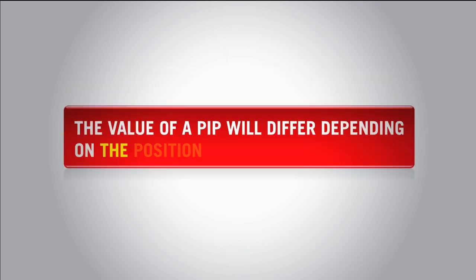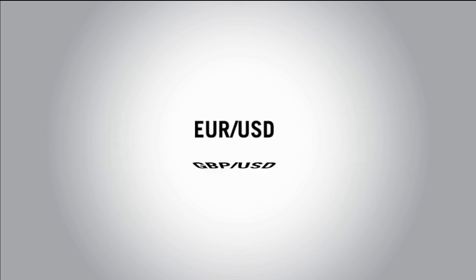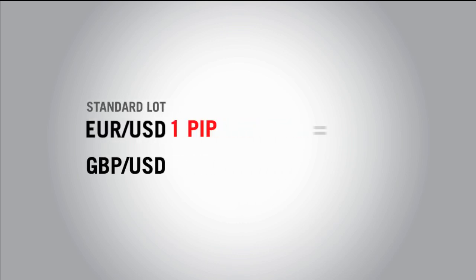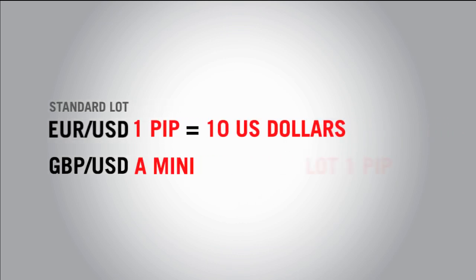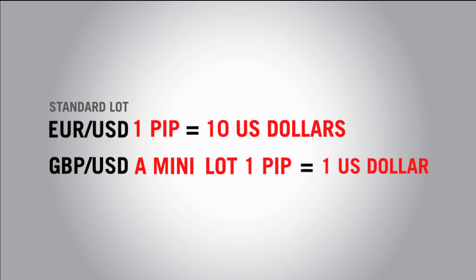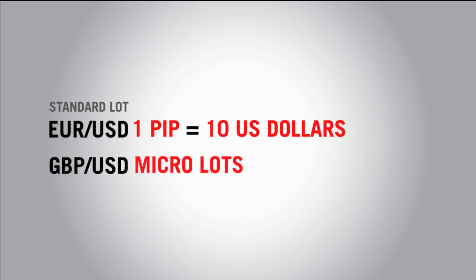The value of a pip will differ depending on the position size and pair. For pairs with the U.S. dollar as the cross currency — the currency on the right — for example the pound dollar or the euro dollar, 1 pip is worth $10 U.S. dollars for a standard lot. In the case of a mini lot, 1 pip is equal to $1 U.S. dollar. Micro lots are worth 10 cents a pip.